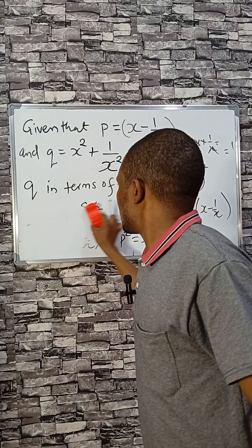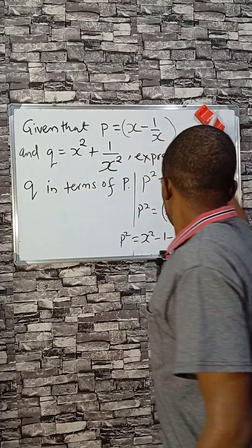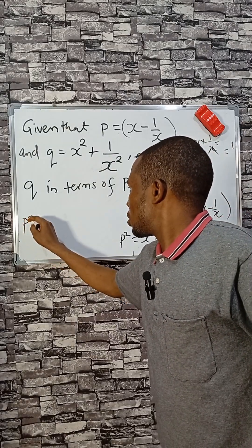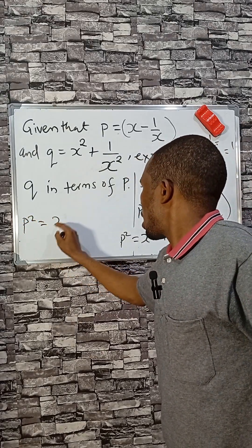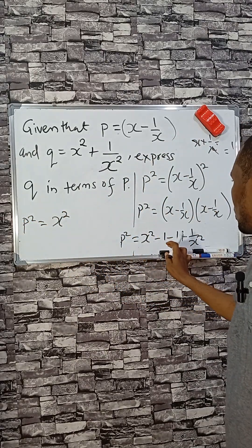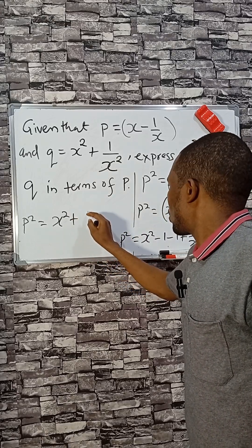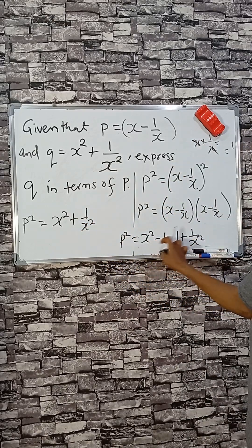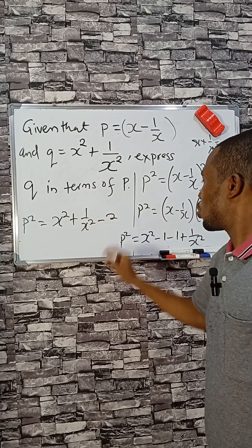Check closely. We have p squared equals x squared plus one over x squared, then minus one minus one, which gives minus two.